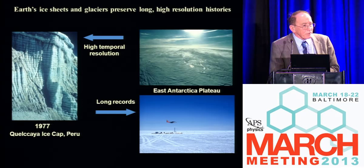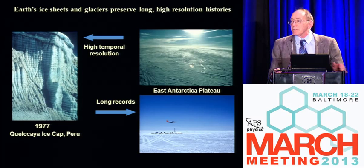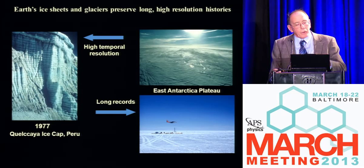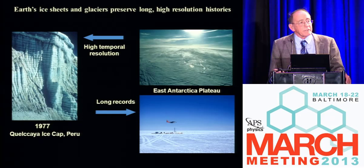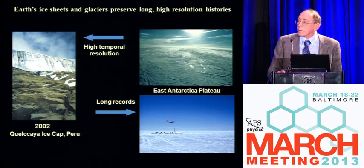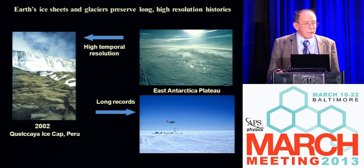We look at glaciers, and we have very long histories out of the polar regions. But we now have histories going back over 25,000 years in the tropics, so we can start looking at how the climate system has worked as recorded in ice. This photo was taken at the margin of the Qillqaya Ice Cap — you can see the annual layers because there's a very distinct wet and dry season. And the same place in 2002. Not only are we losing the glaciers, which are a very important water resource for many people, but we're also losing the history recorded in this ice.